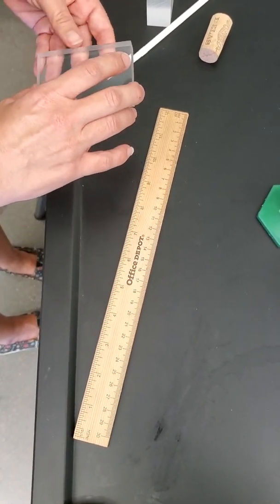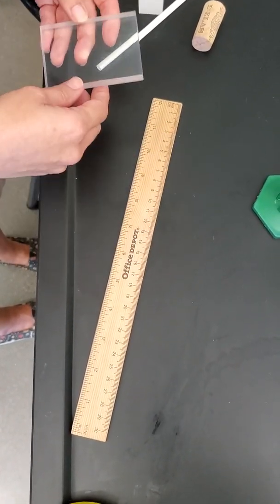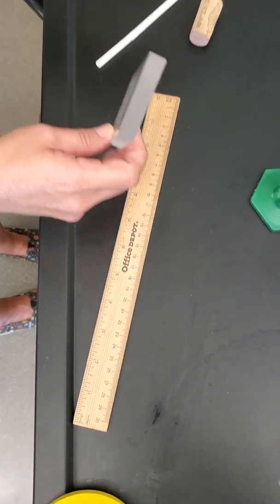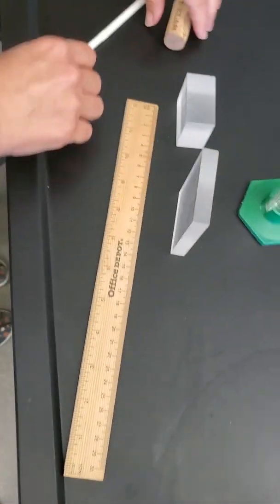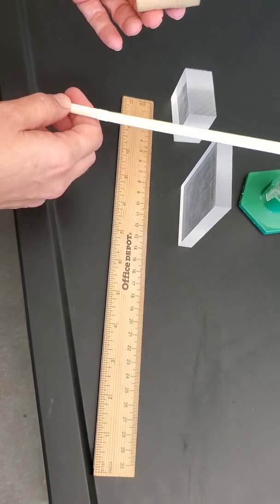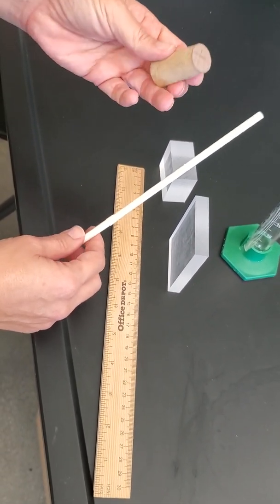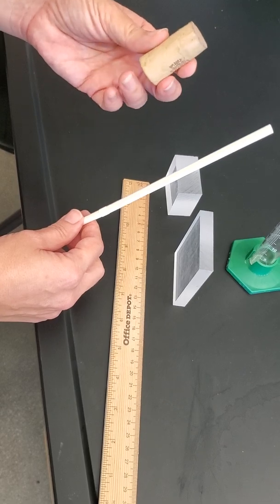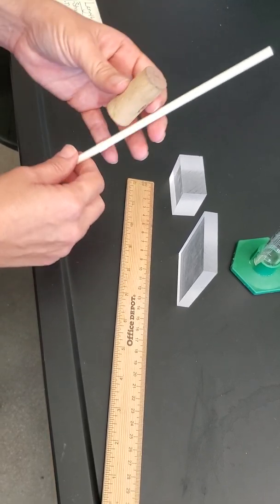We are going to measure the length, width, and height of three objects. Two objects are regular, so we can measure the length, width, and height. However, we're also going to measure two cylinders. We have a straw and a cork. These are cylindrical objects. We just make two measurements on those, and I'll explain those more in a second.